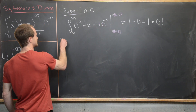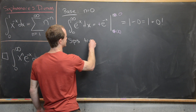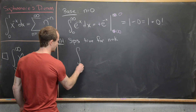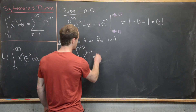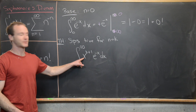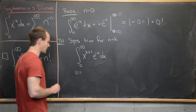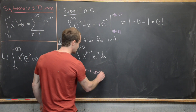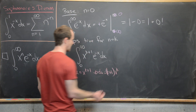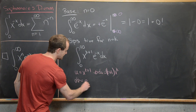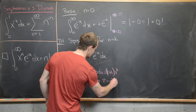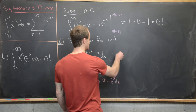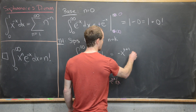For the induction hypothesis, we suppose the formula is true for n equals k, then look at the k plus first term: the integral from 0 to infinity of x to the k plus 1 times e to the minus x dx. We perform integration by parts. We choose u equals x to the k plus 1 — so that it becomes simpler as we take derivatives — making du equal to k plus 1 times x to the k. We let dv equal e to the minus x dx, making v equal to minus e to the minus x.